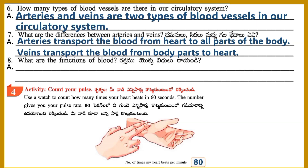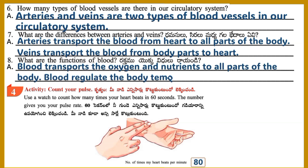Question 7: What are the differences between arteries and veins? Answer: Arteries transport blood from the heart to all parts of the body. Veins transport blood from body parts to the heart. Question 8: What are the functions of blood? Answer: Blood transports oxygen and nutrients to all parts of the body and regulates body temperature.